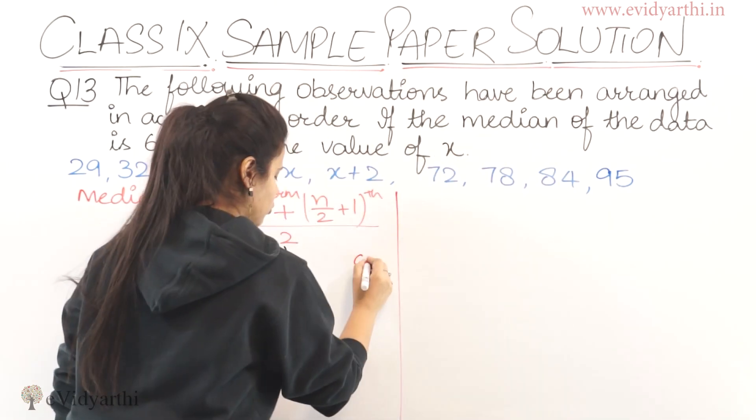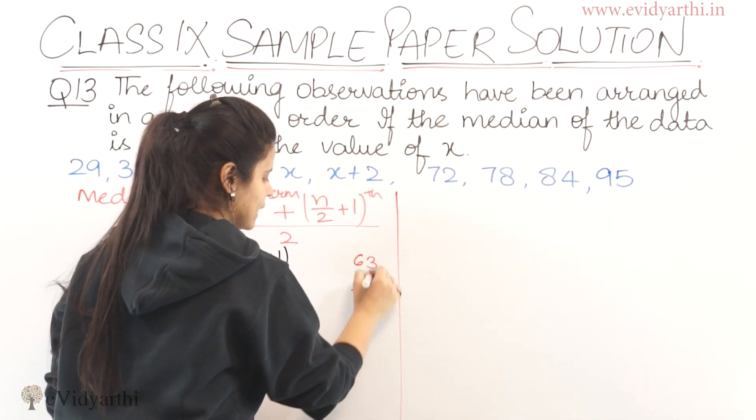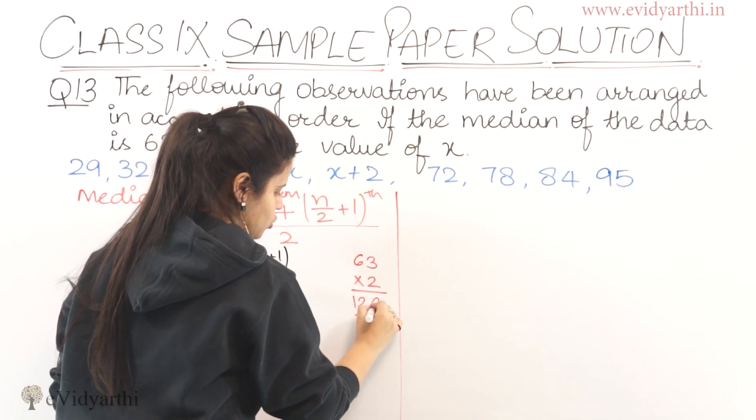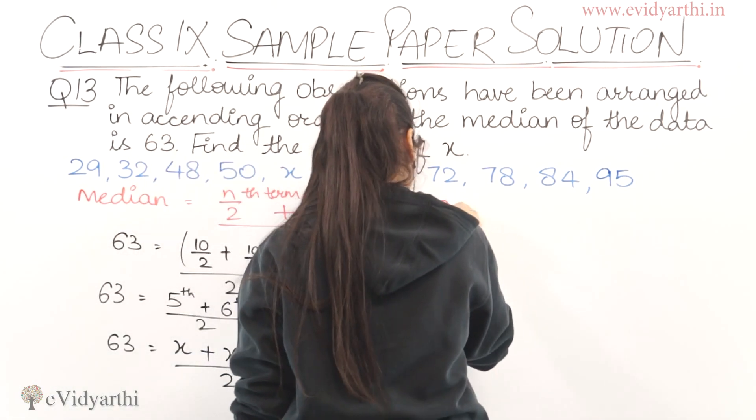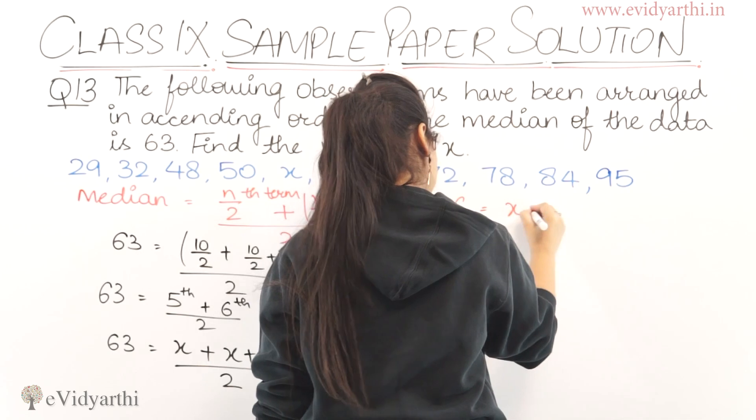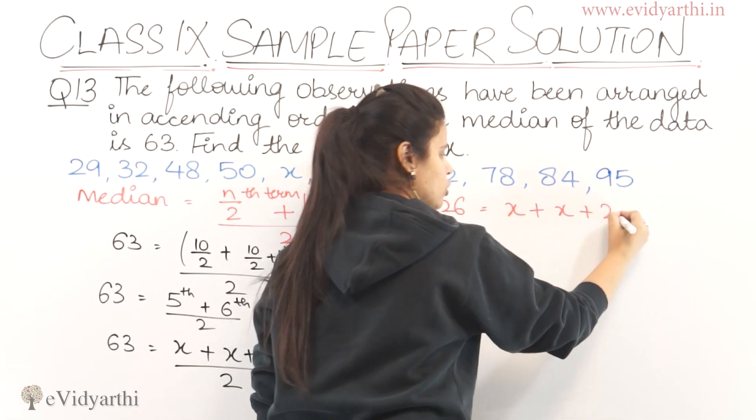So 63 into 2 will be 3 into 2 is 6, 6 into 2 is 12. So we have 126 equals to x plus x plus 2. Correct?